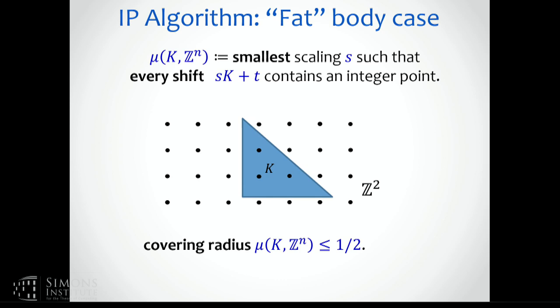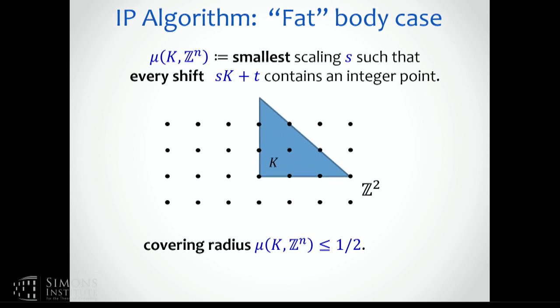That's the hammer: being able to enumerate lattice points. Now let's say we want to solve the integer programming problem. We distinguish essentially two cases. One is when the body you're working with is very big — we measure size in terms of its covering radius. The covering radius is the smallest scaling of the body that always contains lattice points no matter where you shift it, or equivalently, if you put a scaled copy around every lattice point, you cover all of space.